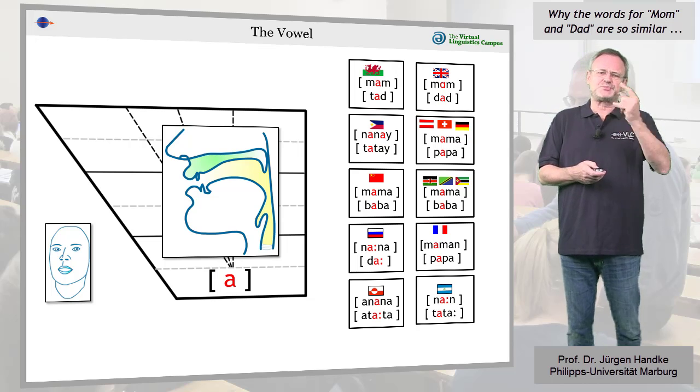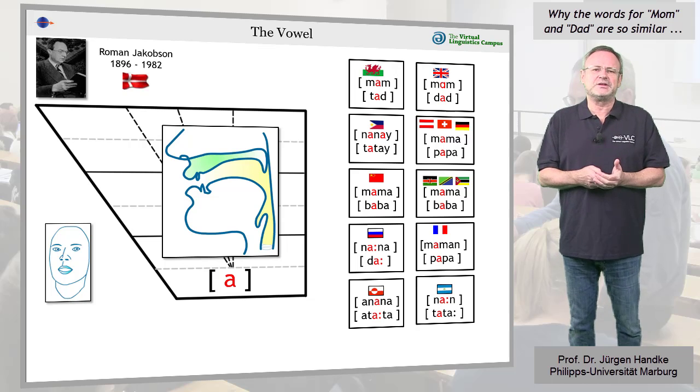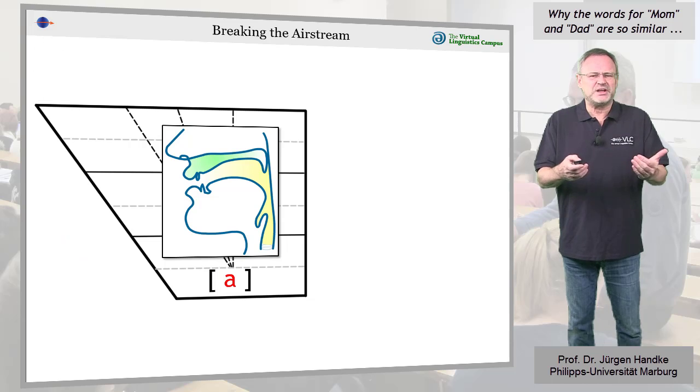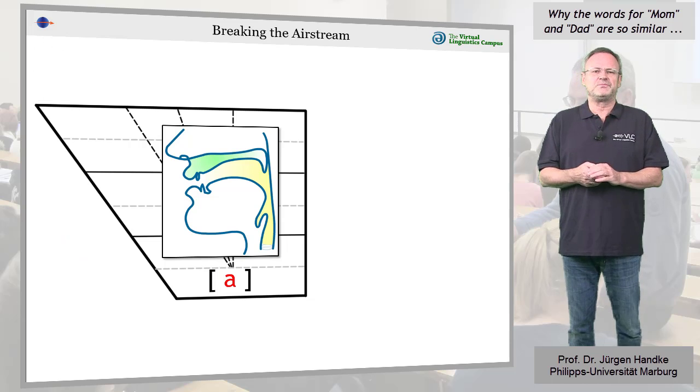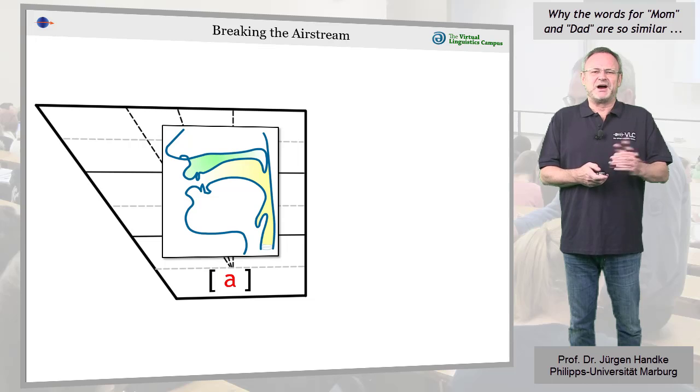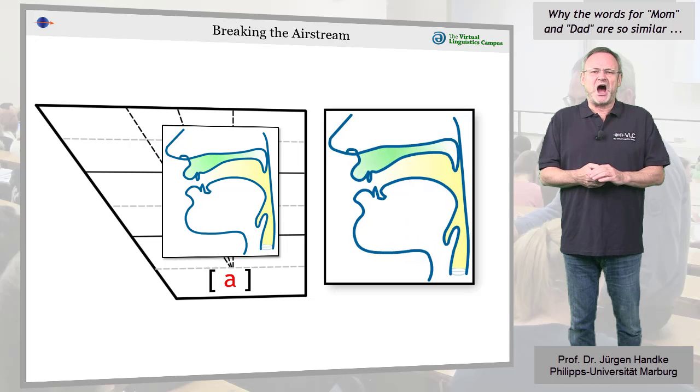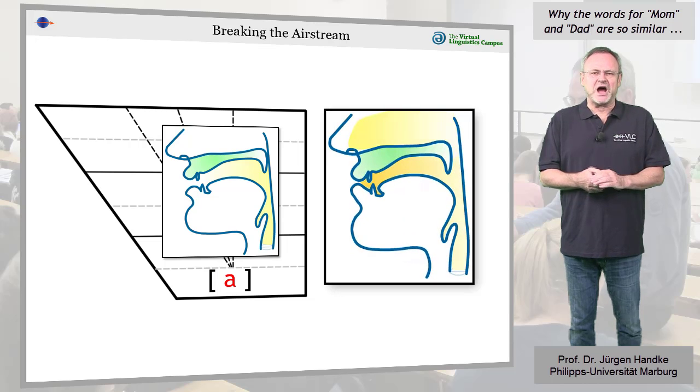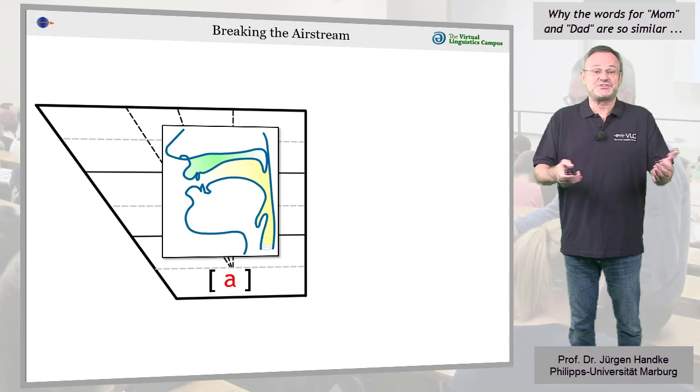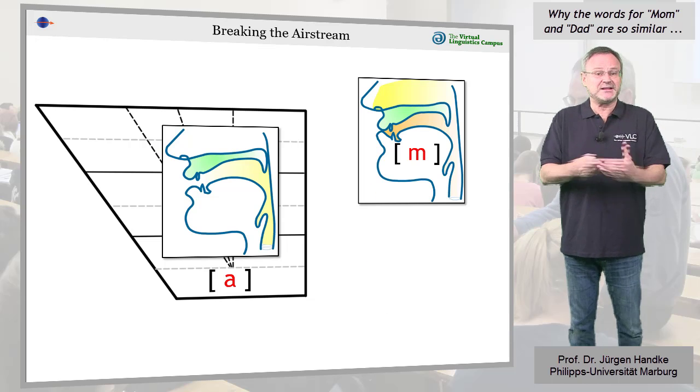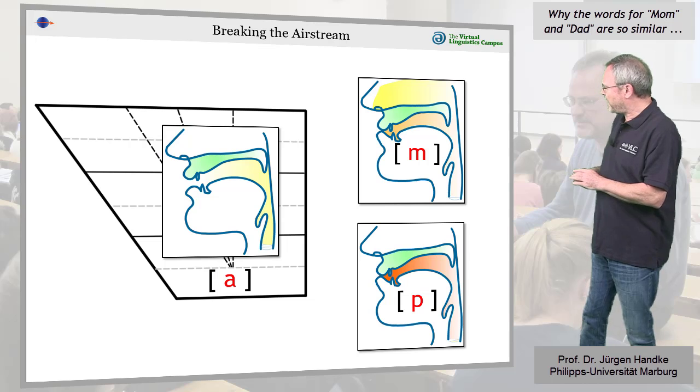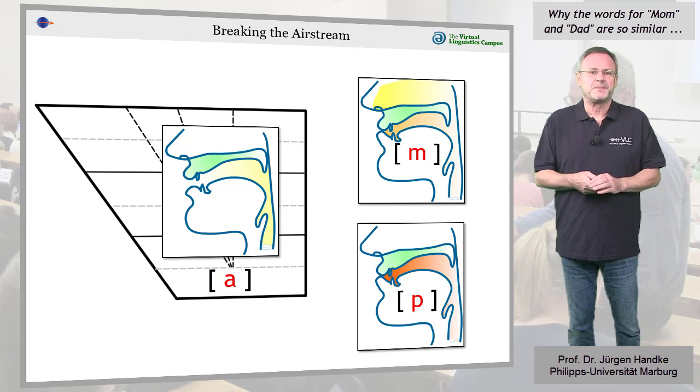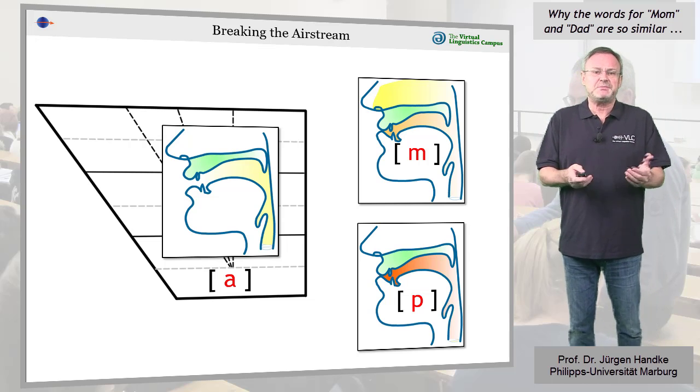And how can we break up the stream of ah? Well, simply by closing our lips. Ah. The result is either am, or at a later stage, ah. Babies do this to nurse.